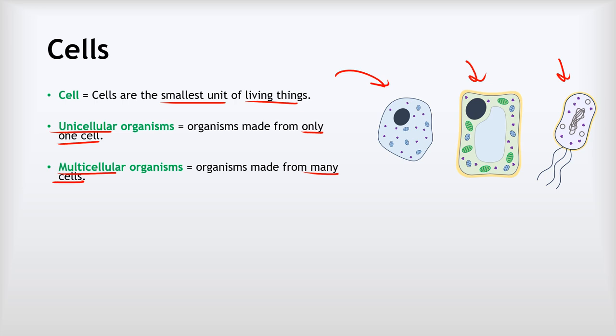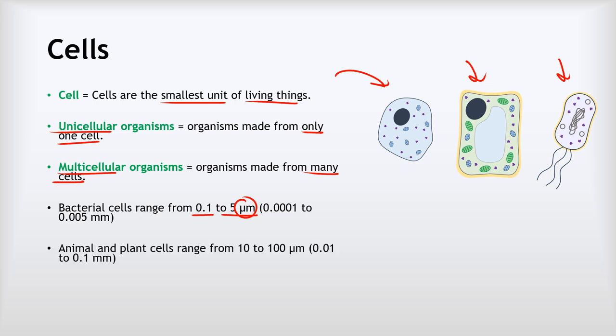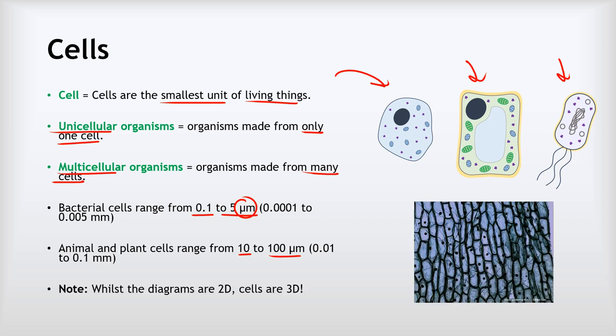Cells are very small. So bacterial cells range in size from 0.1 to 5 micrometers - that's what that funny symbol means there. We'll talk more about micrometers in a later video, but that is 0.0001 to 0.005 millimeters. And animal cells and plant cells are bigger than that - they are 10 to 100 micrometers, so that's 0.01 to 0.1 millimeters in diameter.